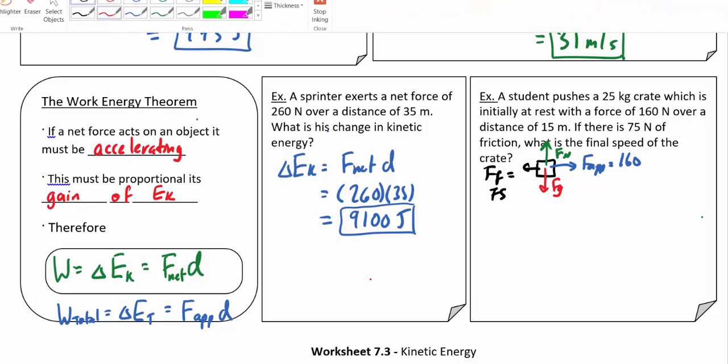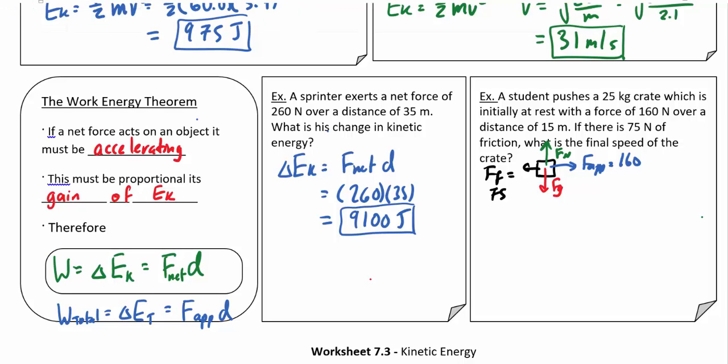How fast will it be traveling after we push it for 15 meters? Well, we know that a change in kinetic energy is equal to F net times D, and a change in kinetic energy is just equal to one half m delta V squared.